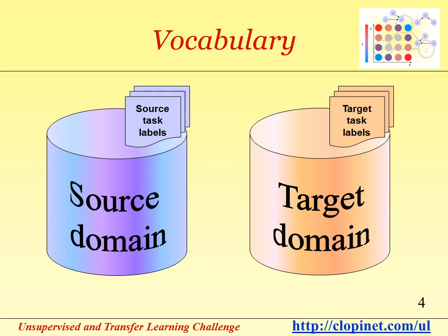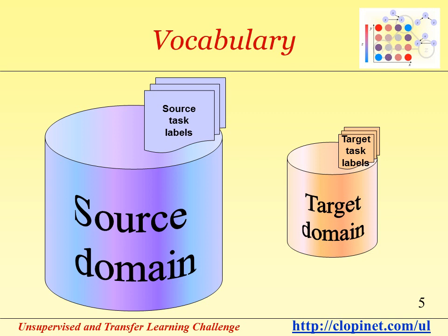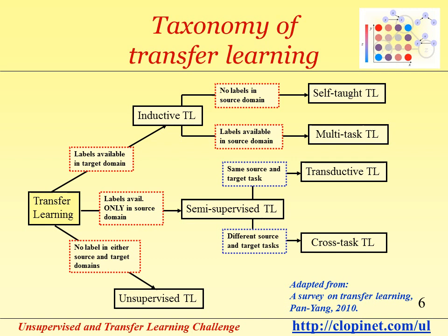In the vocabulary of transfer learning, you have a source domain and source task labels and a target domain and target task labels. It is understood that the source domain has data which is available in much greater abundance than the target domain. In a nice review of transfer learning, Pan and Yang recently proposed a taxonomy of transfer learning methods. Transfer learning subdivides into several subcategories according to whether or not labels are available in the source domain and the target domain, and further subdivides according to whether or not the task is the same in the target and source domain.